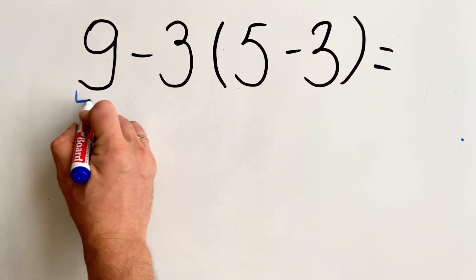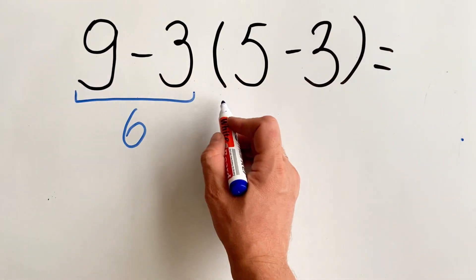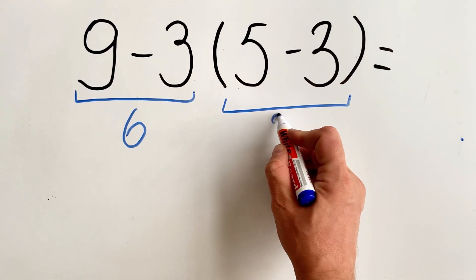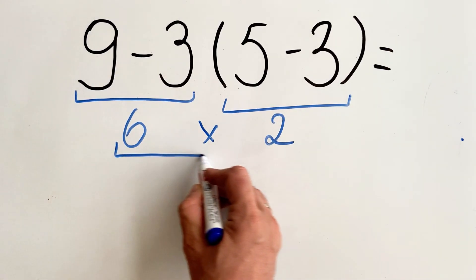9 minus 3 equals 6. 5 minus 3 equals 2. 6 multiplied by 2 equals 12.